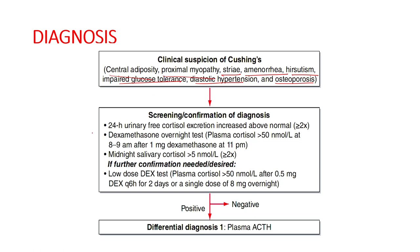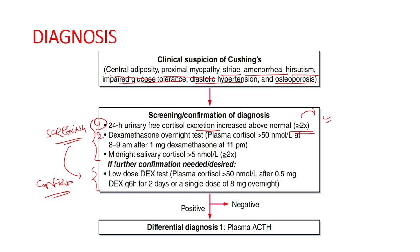For diagnosis, we first perform screening tests, and if positive, perform confirmatory tests. Screening tests include: (1) 24-hour urinary free cortisol excretion — positive if more than two times the upper limit of normal; (2) overnight dexamethasone suppression test — 1 mg dexamethasone given at 11 PM, plasma cortisol measured at 8–9 AM; positive if cortisol remains above 50 nmol/L.